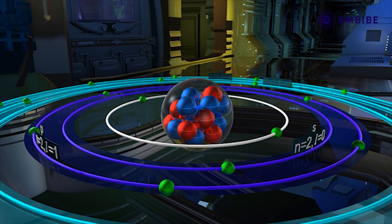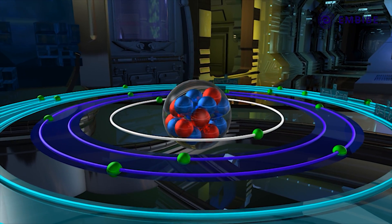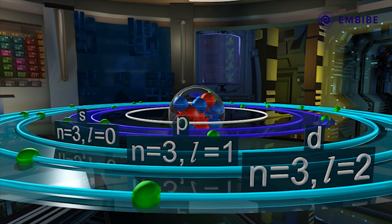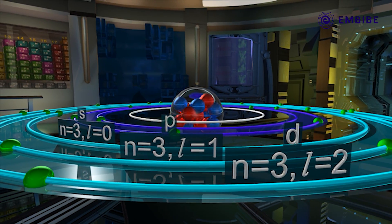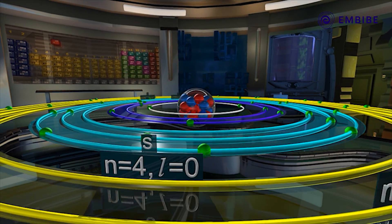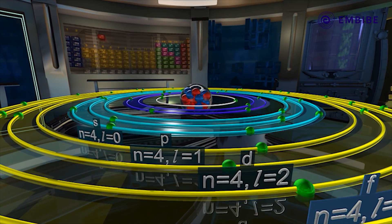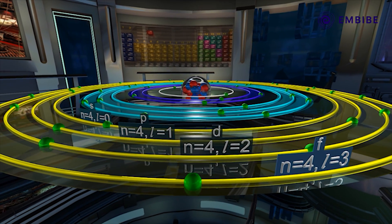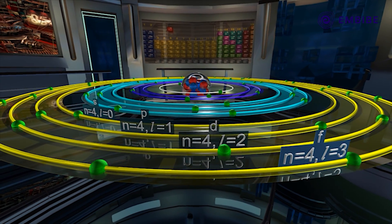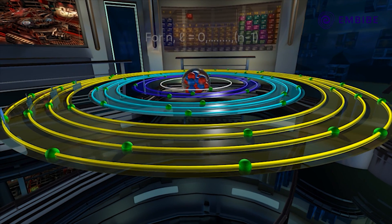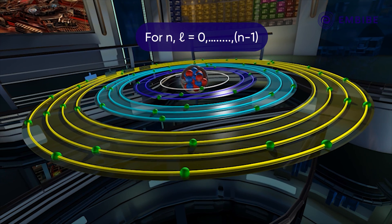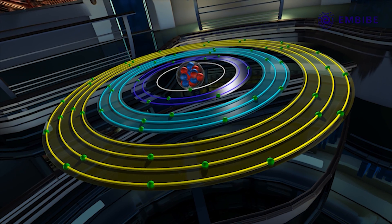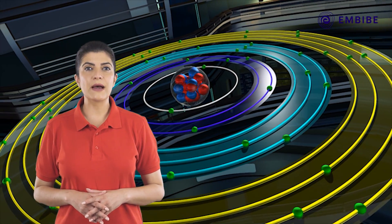The third shell, the M shell, has three subshells — s, p, and d — with values of l equal to 0, 1, and 2 respectively. The fourth shell is divided into s, p, d, and f subshells with l values of 0, 1, 2, and 3 respectively. In general, for each principal quantum number n, the value of l ranges from 0 to n minus 1.